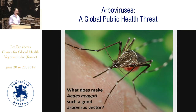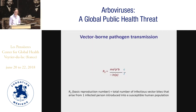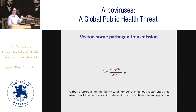So what makes Aedes aegypti such a good arbovirus vector? To answer this question it is useful to consider the equation of the basic reproduction number of a vector-borne pathogen, R0. R0 is defined as the total number of infectious vector bites that arise from a single infected person introduced into a susceptible human population — basically, how many secondary cases arise from a single initial case.